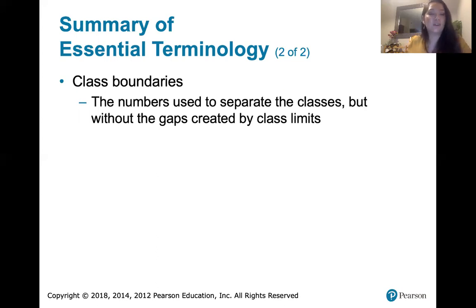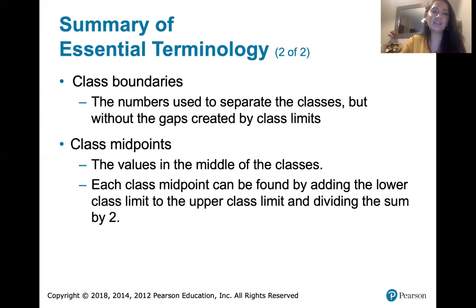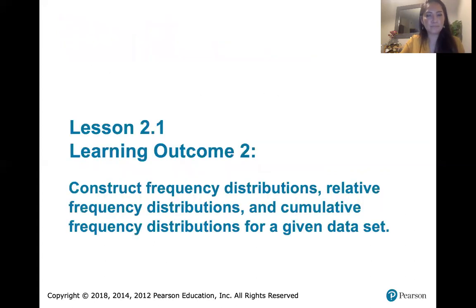Keep doing that for all classes, and assume the pattern holds at the very beginning and very end. Class midpoints are the values in the middle of each class — add the lower and upper class limits and divide by two to find them. That's it for learning outcome number one. I'll see you in the next video for learning outcome number two.